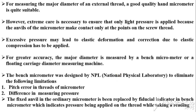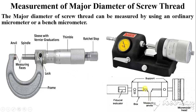For measuring the major diameter of an external thread, a good quality hand micrometer is suitable, but extreme care must be taken to apply only light pressure, as the anvils make contact only at the points of the screw thread. Excessive pressure may lead to elastic deformation. For greater accuracy, the major diameter is measured by a bench micrometer or floating carriage diameter measuring machine. The bench micrometer was designed by the National Physical Laboratory (NPL) to eliminate pitch error in the micrometer threads and differences in measuring pressure. The fixed anvil is replaced by a fiducial indicator which indicates the pressure being applied.